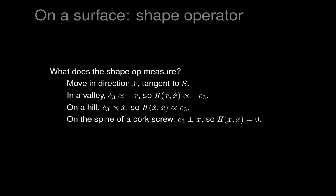What if you're on the spine of a corkscrew? In the middle of it, as you step forward, your head tilts to the side - left or right - so your feet move with velocity x-dot but your head slides perpendicular to x-dot. Therefore, the dot product of those two vectors is zero. So on something like the spine of a corkscrew as you're twisting, you find the shape operator giving you zero. We can already see roughly what the shape operator is measuring.